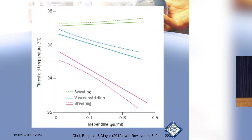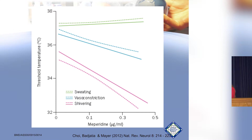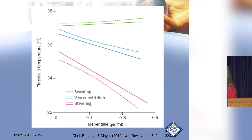Meperidine (Demerol) has been used for shivering in anesthesia for decades. Looking at the doses, the larger the dose, the more it shuts down shivering. It also has some effect on vasoconstriction but doesn't really do anything for sweating.